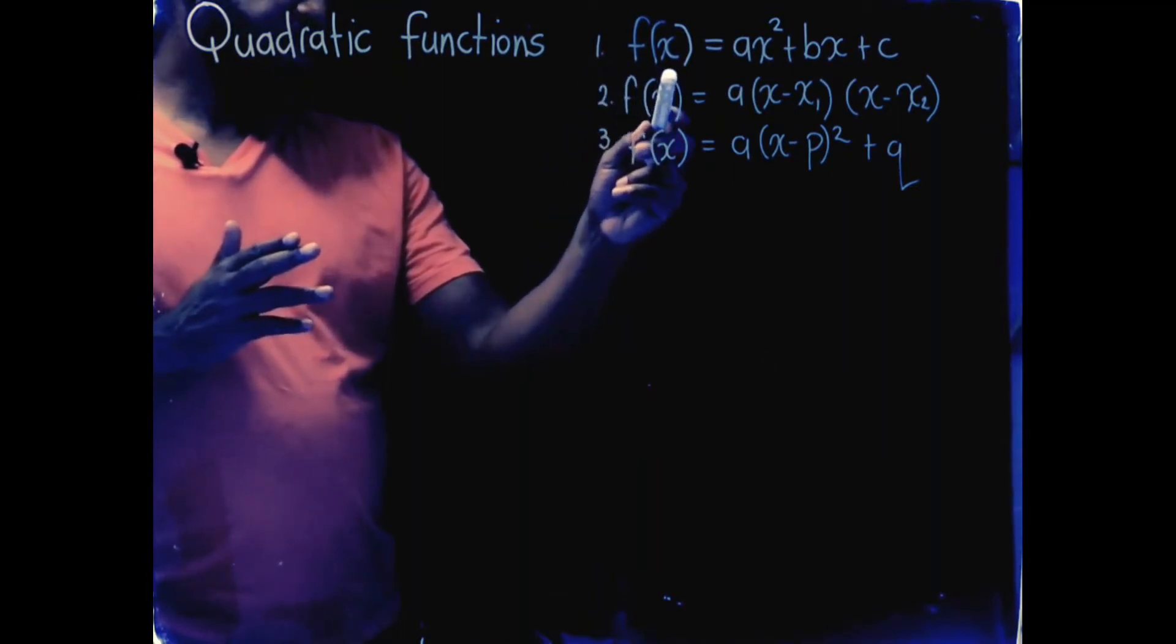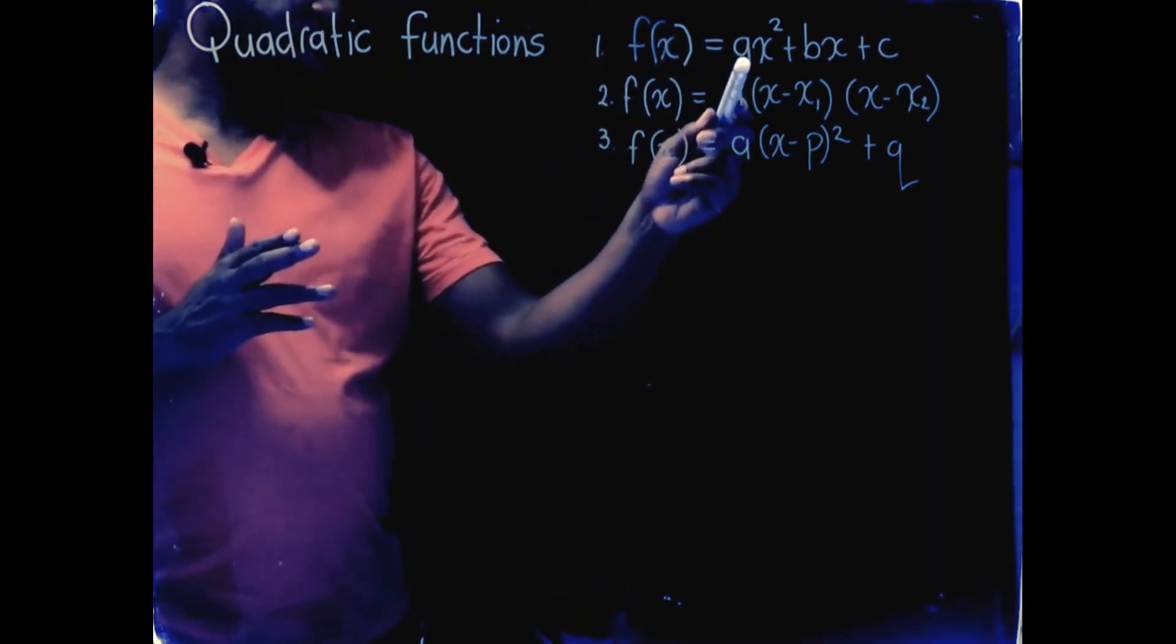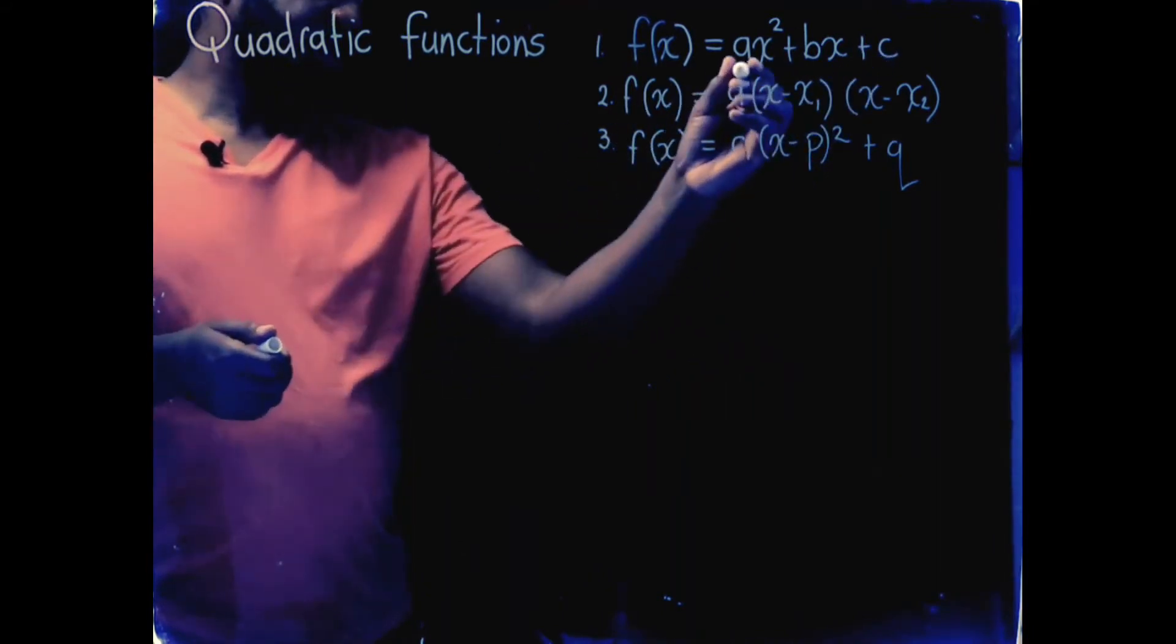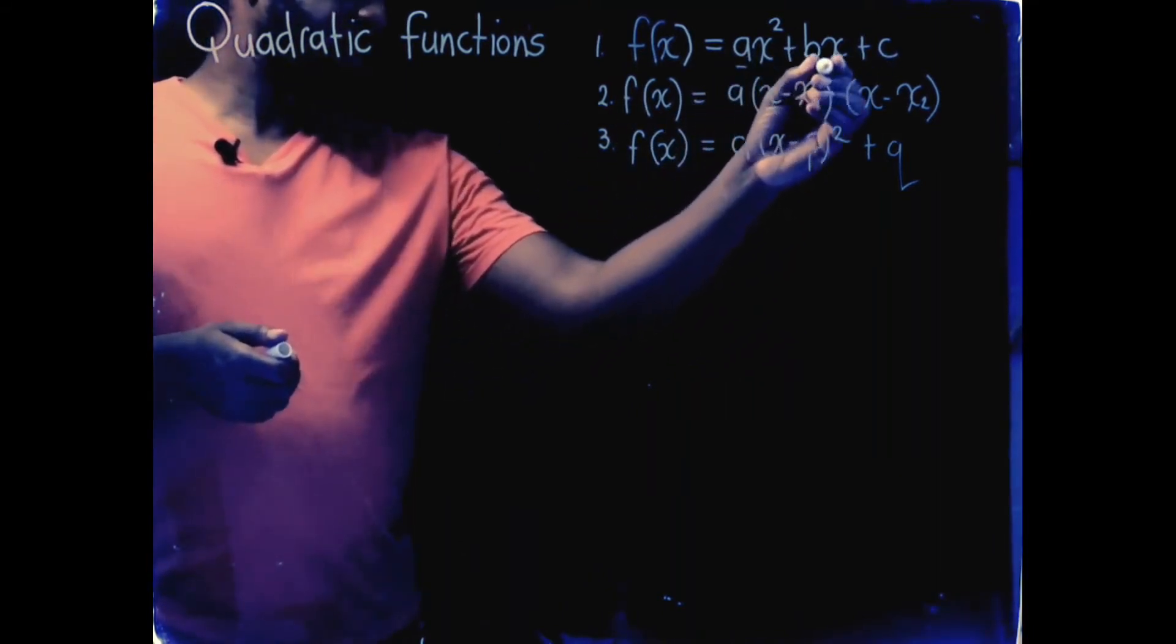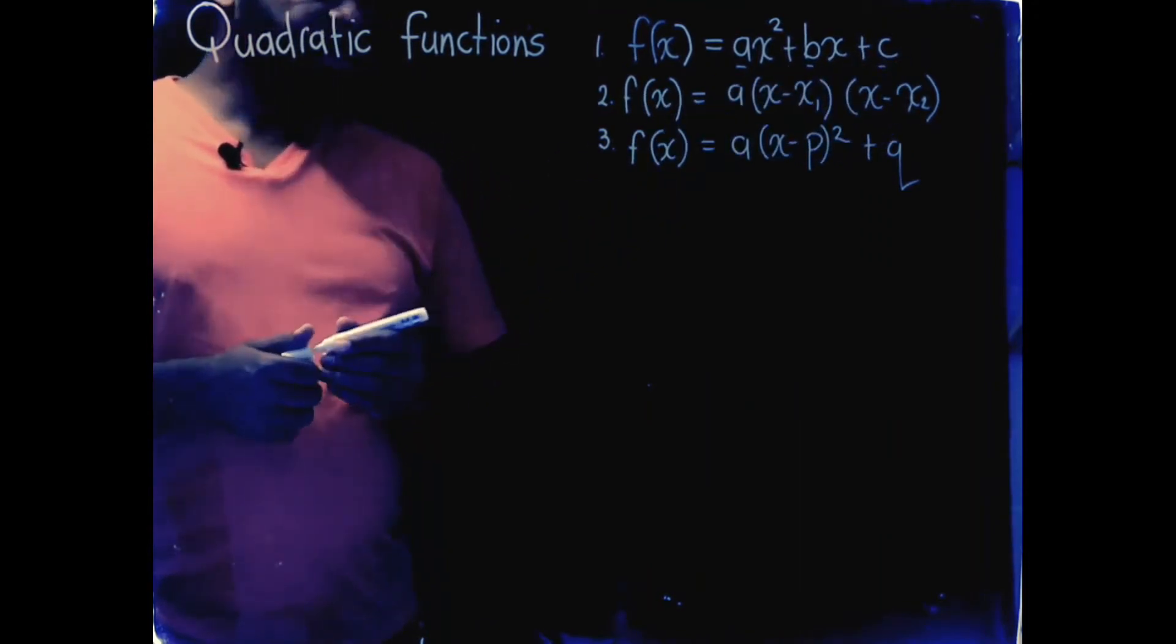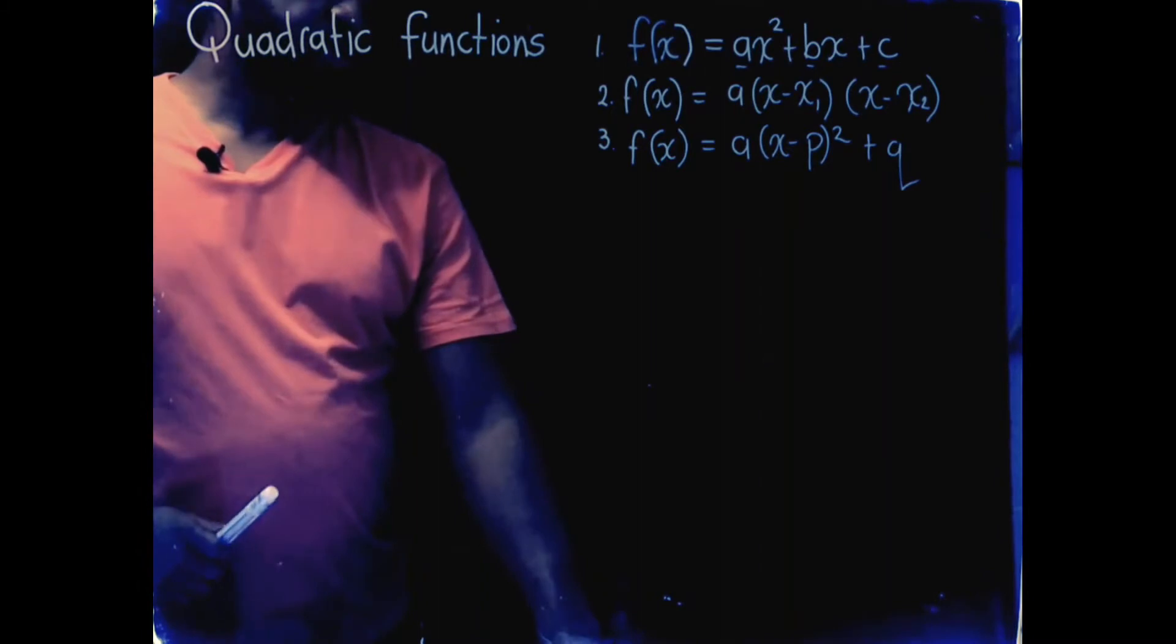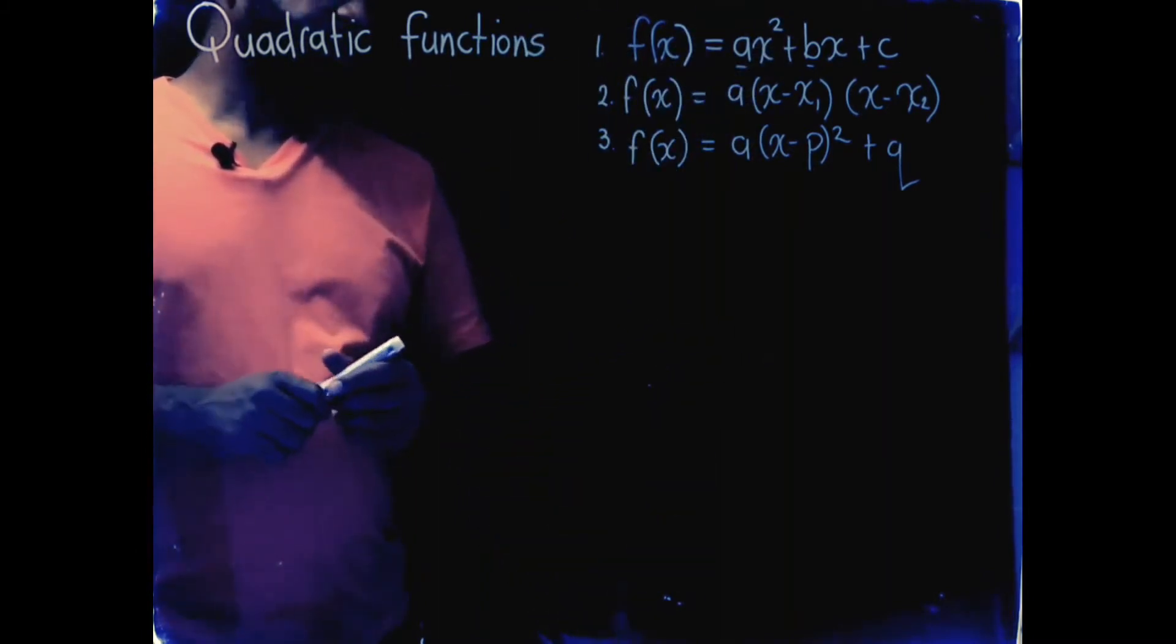The first format says f of x is equal to ax squared plus bx plus c. In this format you can see the a value, the b value, and the c value, which is important when you're going to be using other formulas that involve a, b, and c. We call that the standard form.